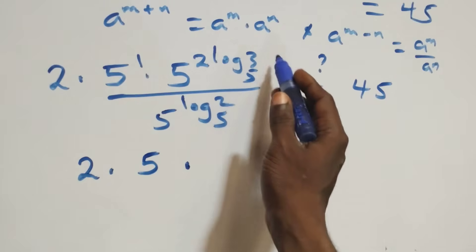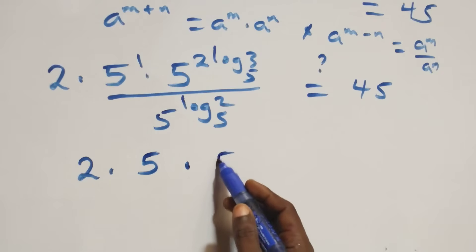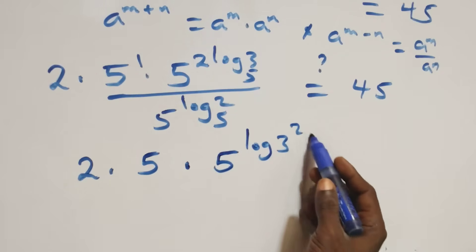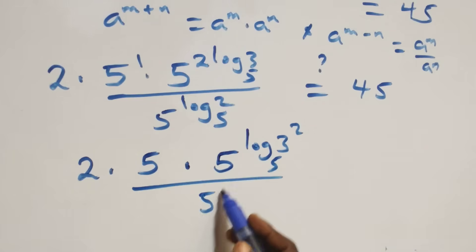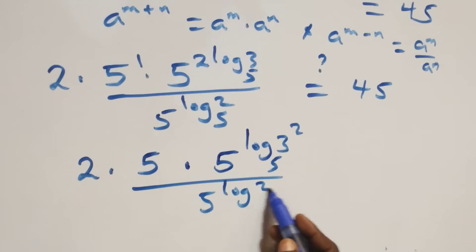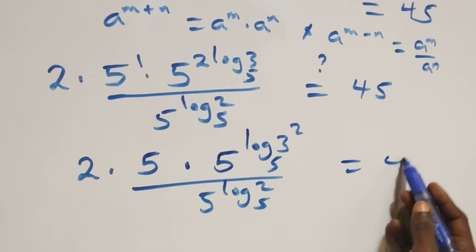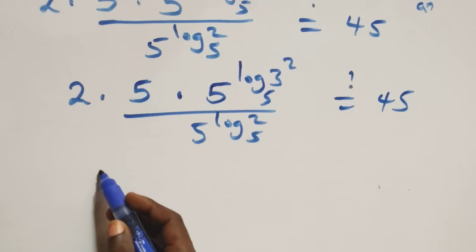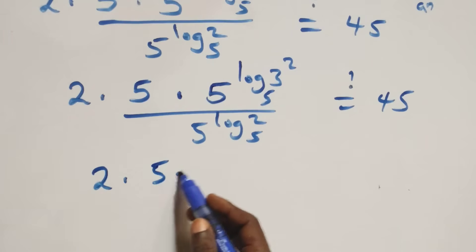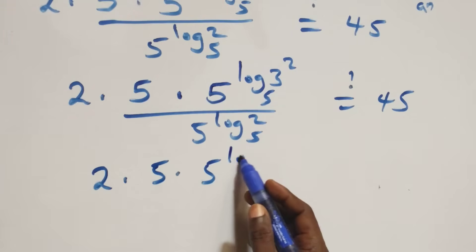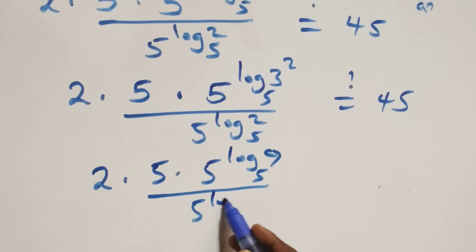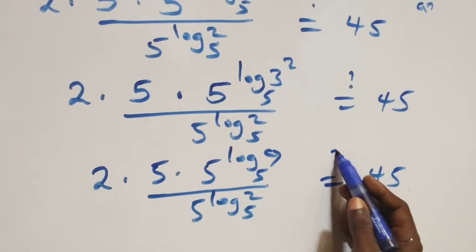We can revise this using the power-log form, and we have 5 raised to power log₅(3²) over 5 raised to power log₅2, which equals to 45. We can write it as 2 times 5 times 5 raised to power log₅(9) over 5 raised to power log₅2, equals to 45.